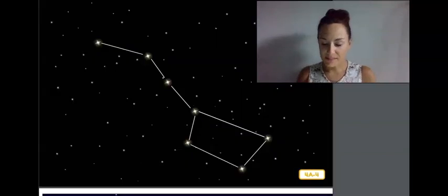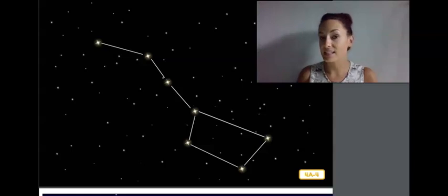One of the first groups of stars that young stargazers in the United States learn about is also the easiest one to spot. The Big Dipper looks like a giant soup ladle up in the sky. The Big Dipper is made up of seven stars. The Big Dipper looks very different in the sky depending on the time of year.